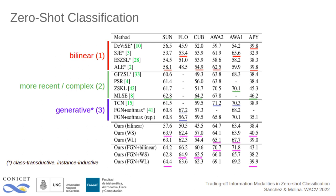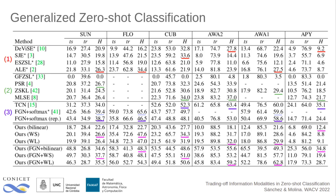Adding a feature generation step, as in the latter group, greatly improves performance. Similar observations can be made in the generalized zero-shot case, where we evaluate our model on instances from both training and testing categories. If we consider the harmonic mean, our model performs better than the models in groups one and two, and achieves competitive performance on those in the third group after adding a feature generation step.